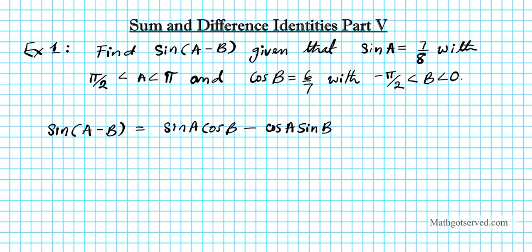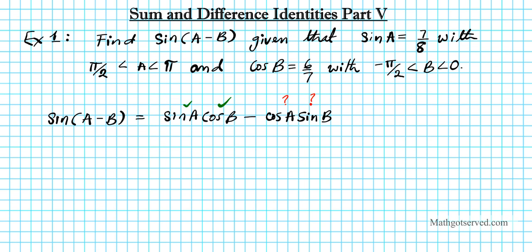Let's see what we know. We're provided with sine A and also cosine B. So in order to find sine A minus B, we need to determine what cosine A is and what sine B is. To do that, we need to make use of the Pythagorean identity: sine squared theta plus cosine squared theta equals 1.